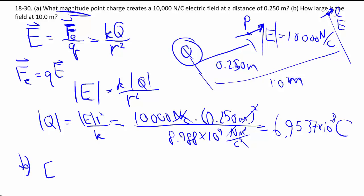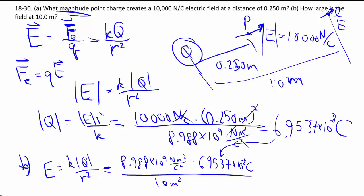So basically we do the same calculation again, but with a different R this time, Q stays the same though, because it's the same charge causing the electric field. And that just goes in there. We can round it off to 6.25 N per coulomb.